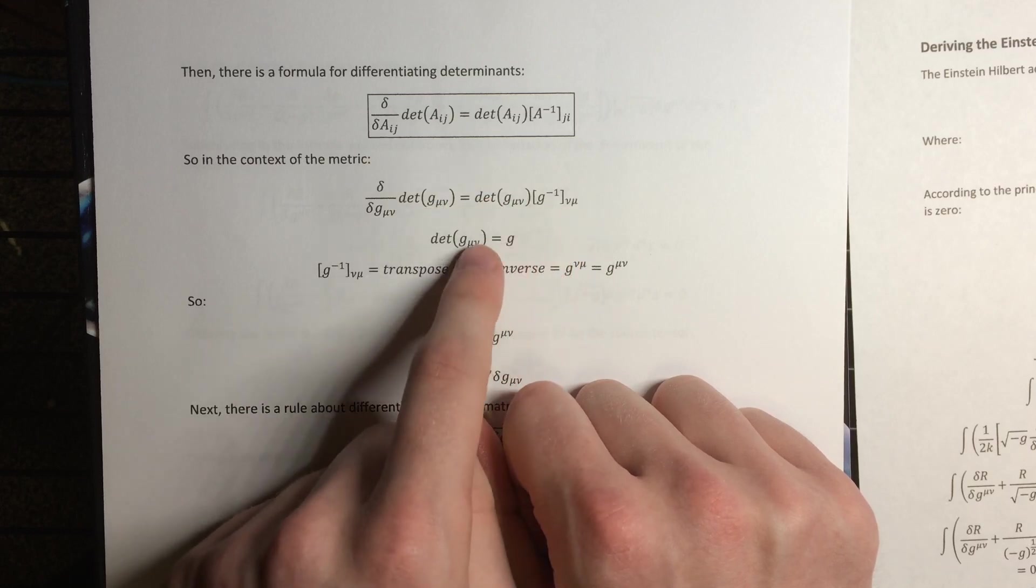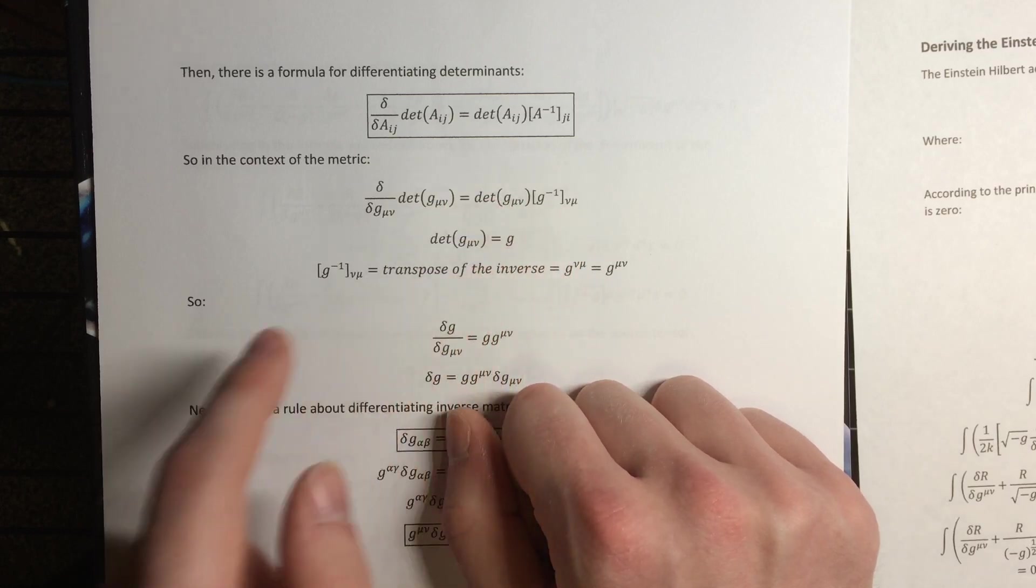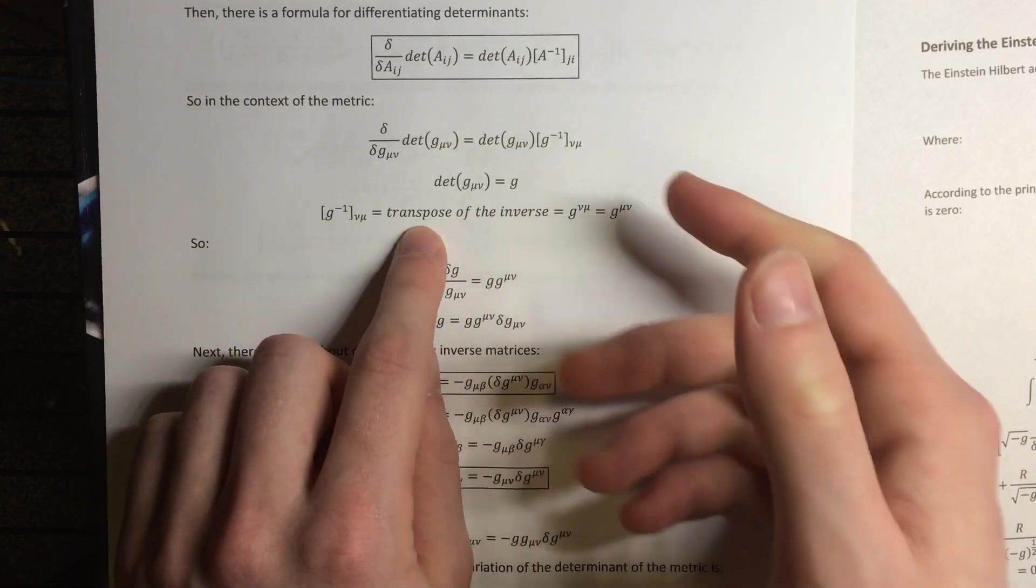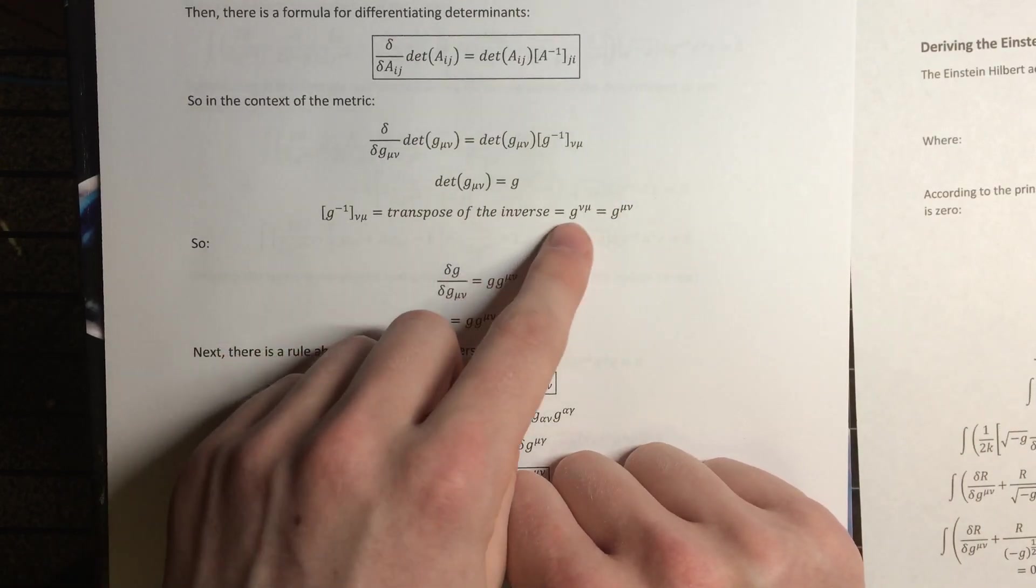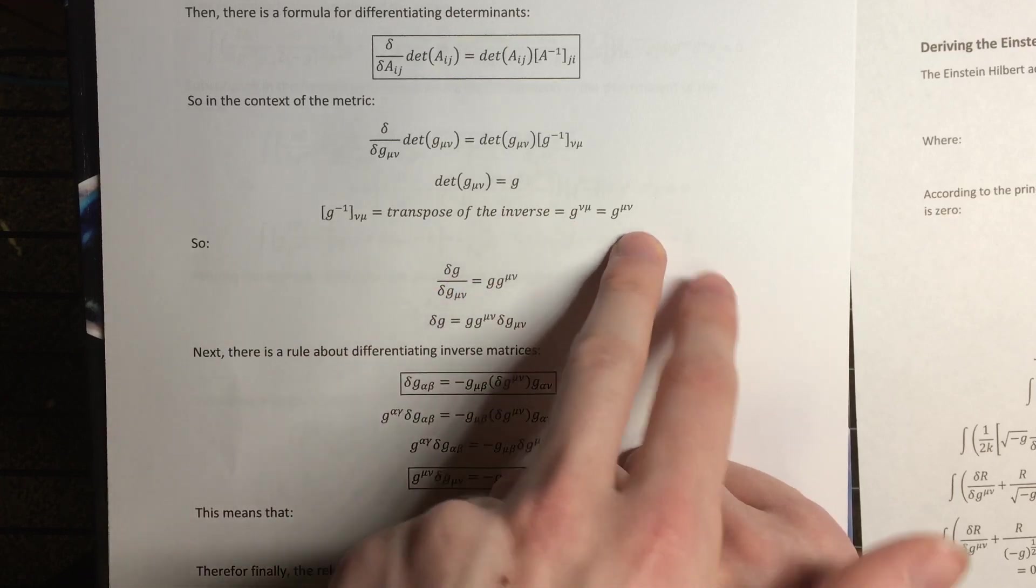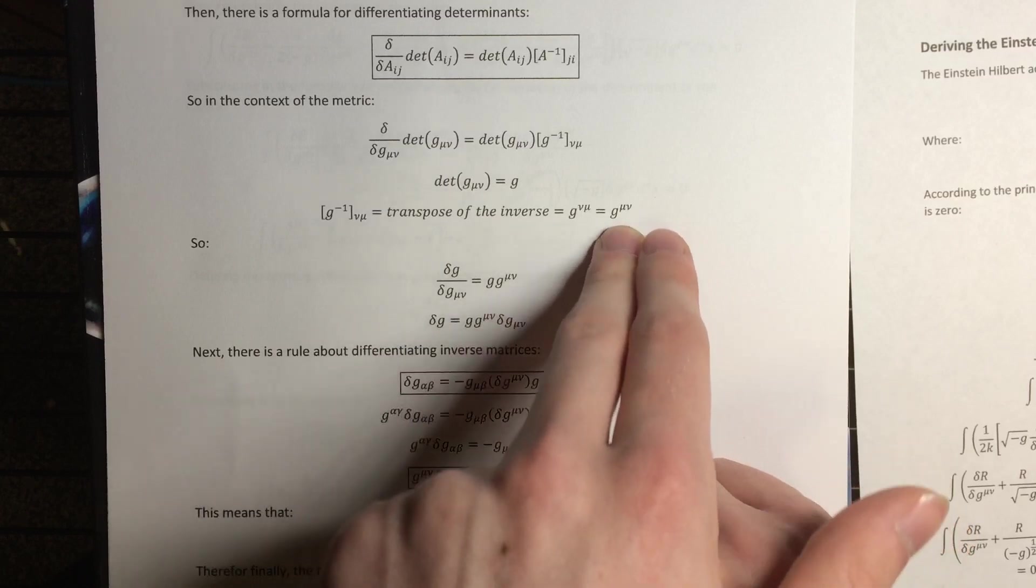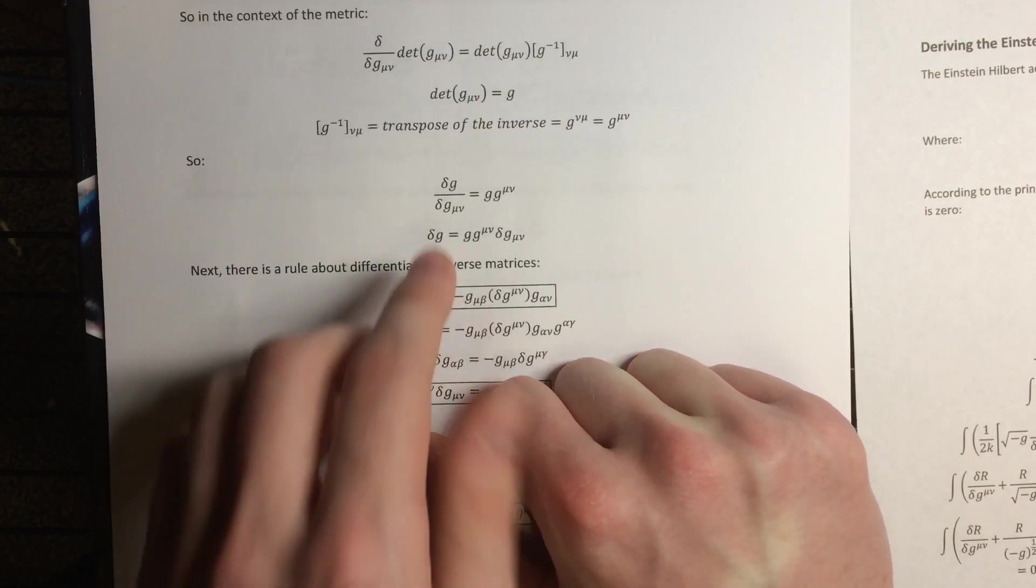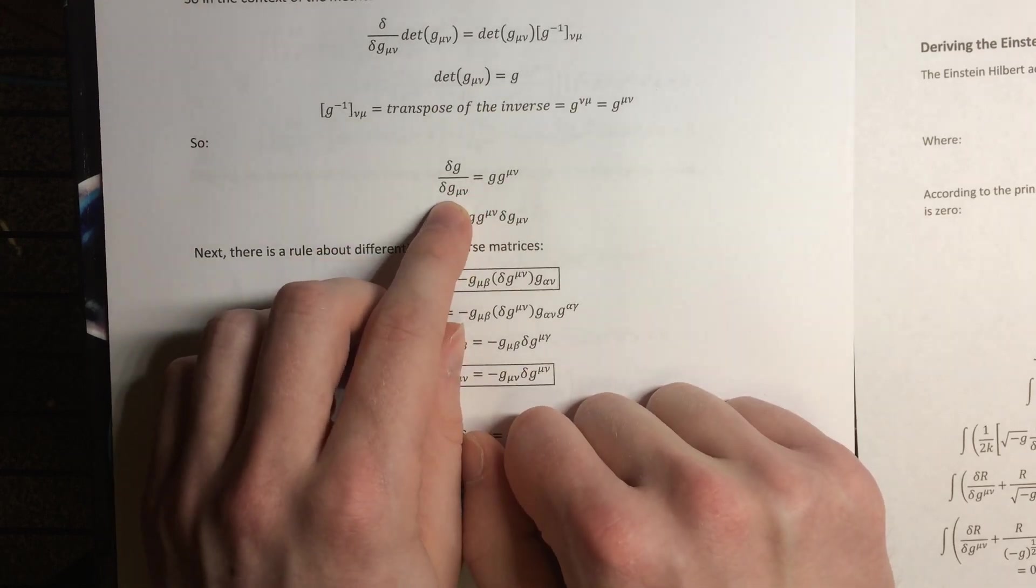So then writing that with the covariant metric, because that's the thing whose determinant we're varying, we get this. Okay, so then we just replace this with G because that's the notation we've defined. Then the transpose of the inverse of the metric, well first the inverse of the covariant metric is just the contravariant one, then we flip the indices to get the transpose, but it's symmetric so we don't actually really need to do that. We can just write the contravariant metric, it doesn't end up mattering. So then, plugging that in gives us this result here.